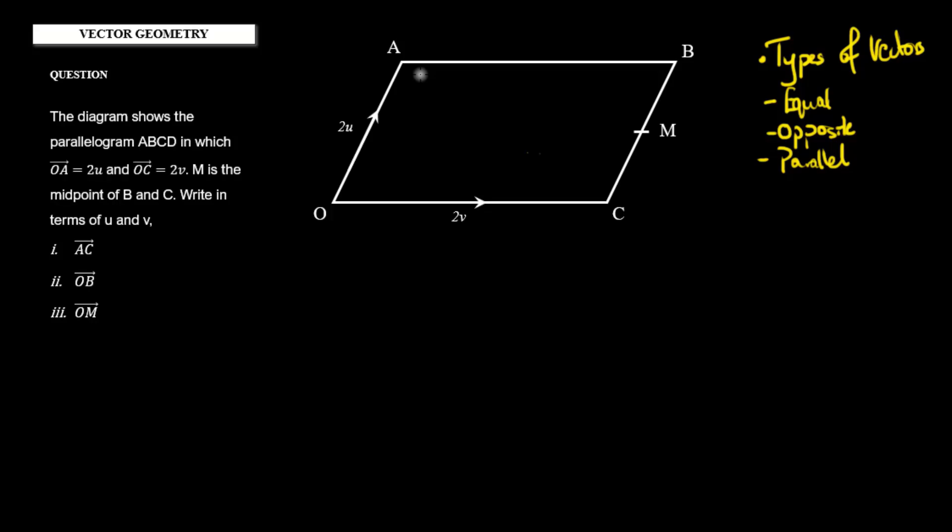The best way to show you that is by doing your problem. So let's take our parallelogram here ABCD, in which OA is 2u and vector OC is 2v. M is the midpoint of B and C, and we want to write in terms of u and v: AC, OB, and OM.